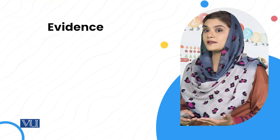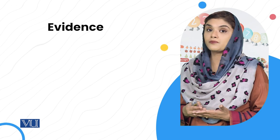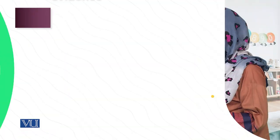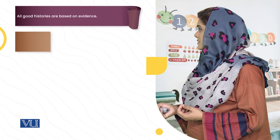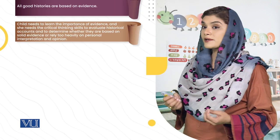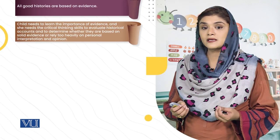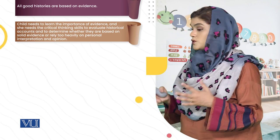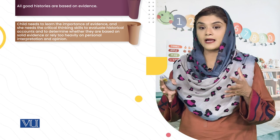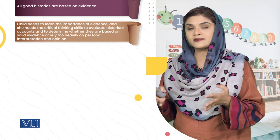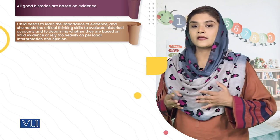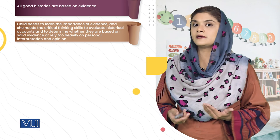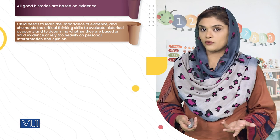Evidence is one of the most important things in history writing. All good histories are based on evidence, and children need to learn the importance of evidence so they can look critically. They must develop the critical skill to assess whether the account, evidences, dates, and scripts presented are actual or fictional, and how personal interpretation and personal opinion can change the narration of history.